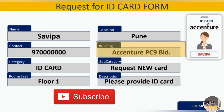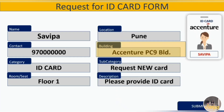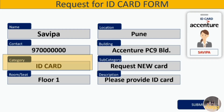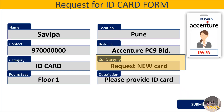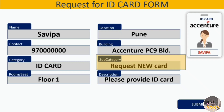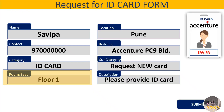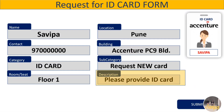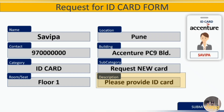For sample: my name is Avipa, location is Pune, contact number provided, building is Accenture PC9. Category — select 'ID Card' because we are requesting an ID card. Subcategory — select 'Request New ID Card.' Room number — since I didn't know it, I mentioned 'First Floor' or 'Second Floor.' For description, write something like 'Please provide my ID card' to explain you are requesting one. Then click Submit.